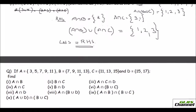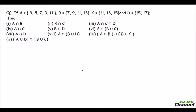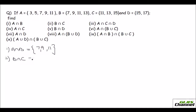Now let us do some practice problems quickly. First, find A intersection B — the values common in A and B are 7, 9, and 11. Second, find B intersection C — look at B and C alone, and you have 11 and 13 common.